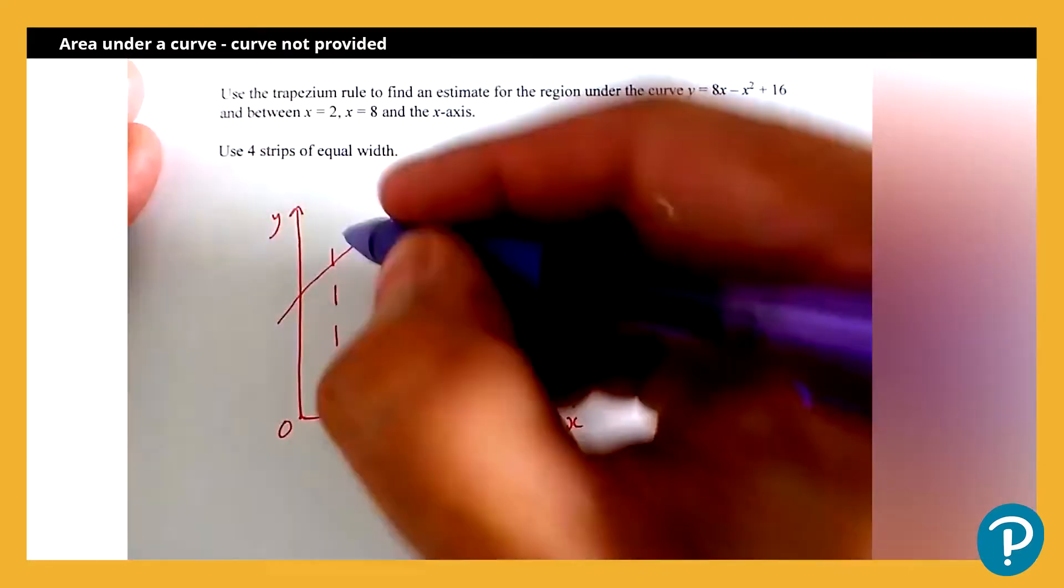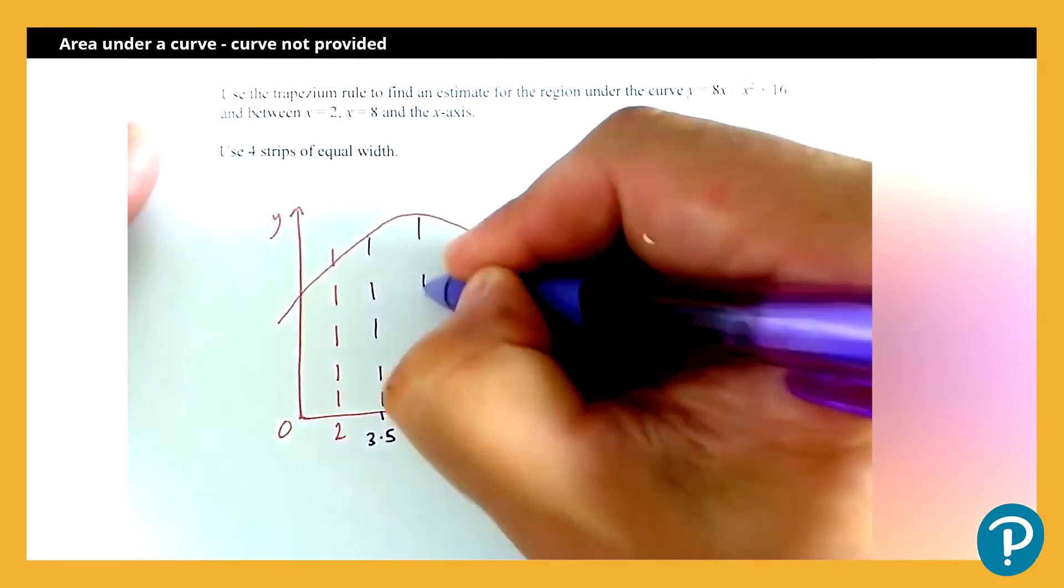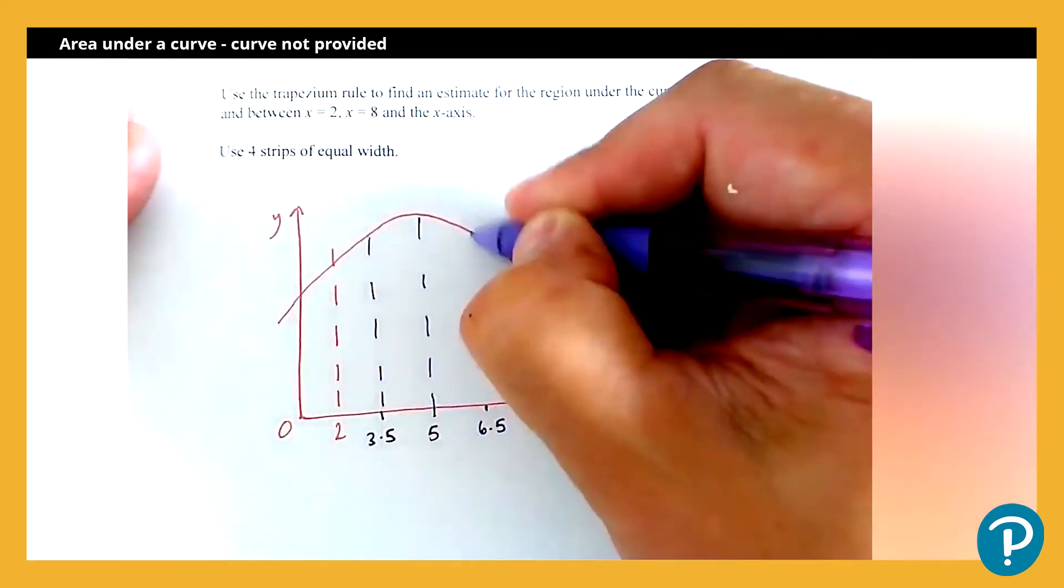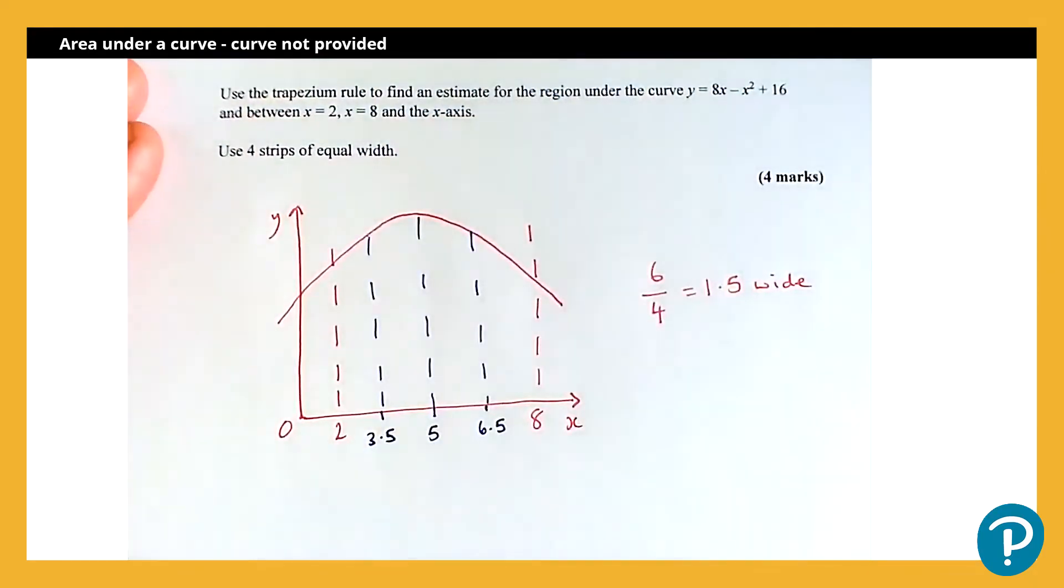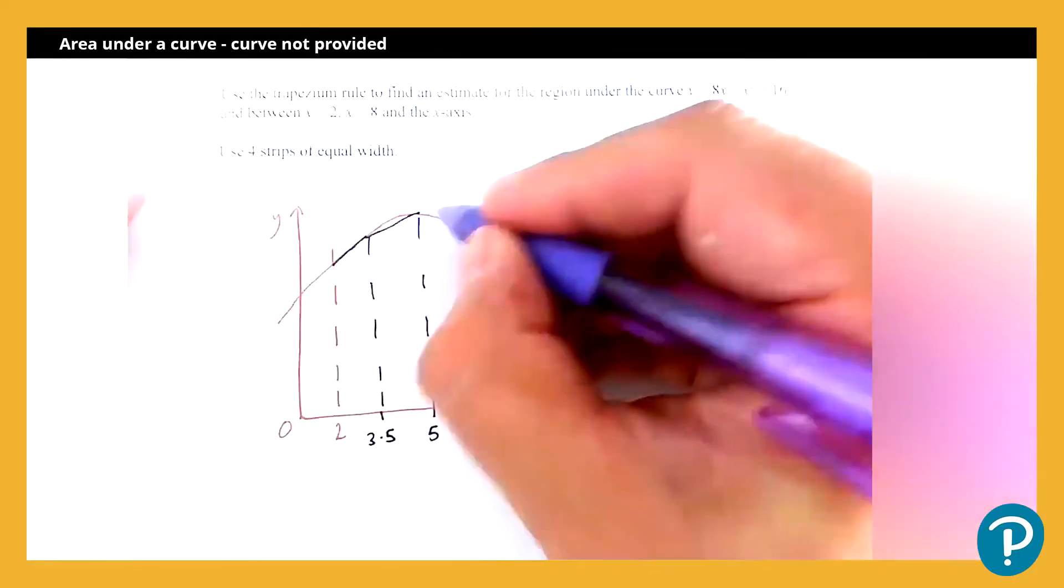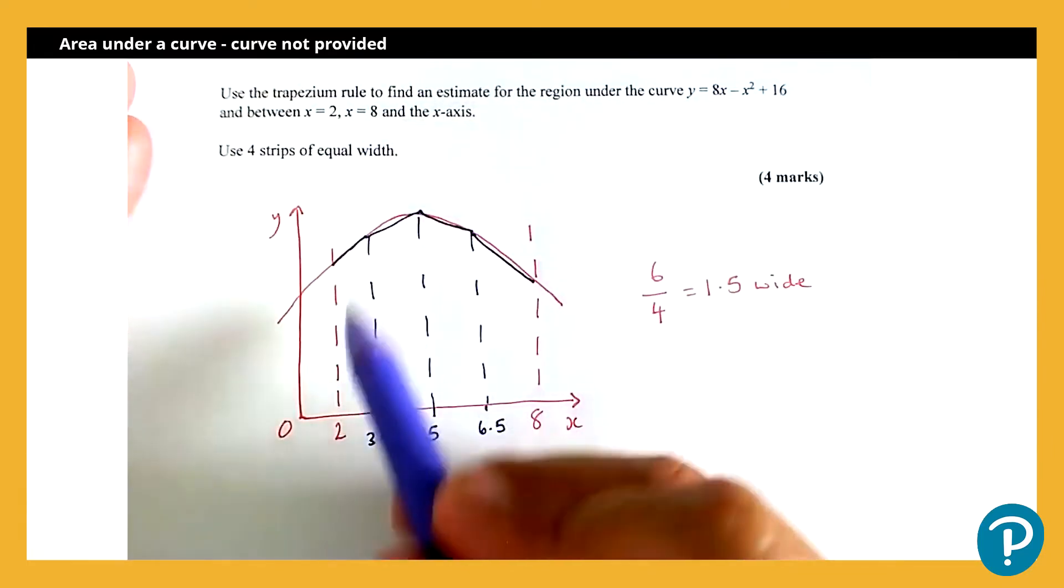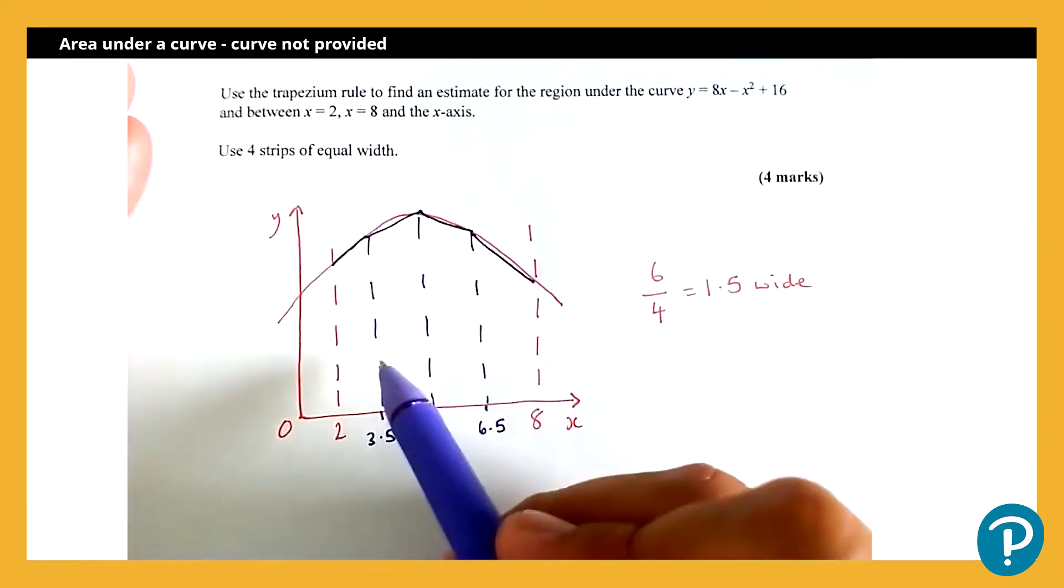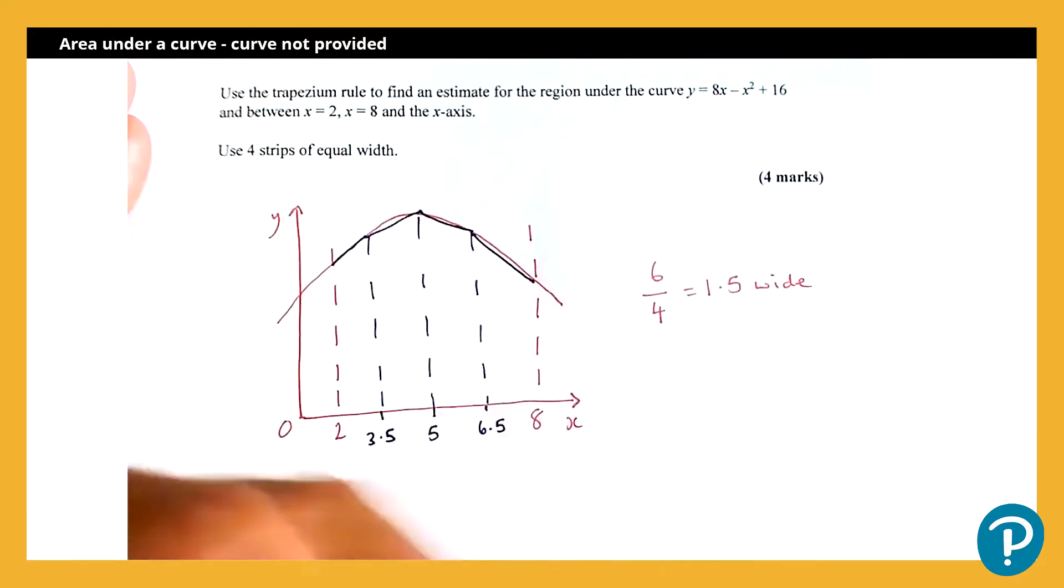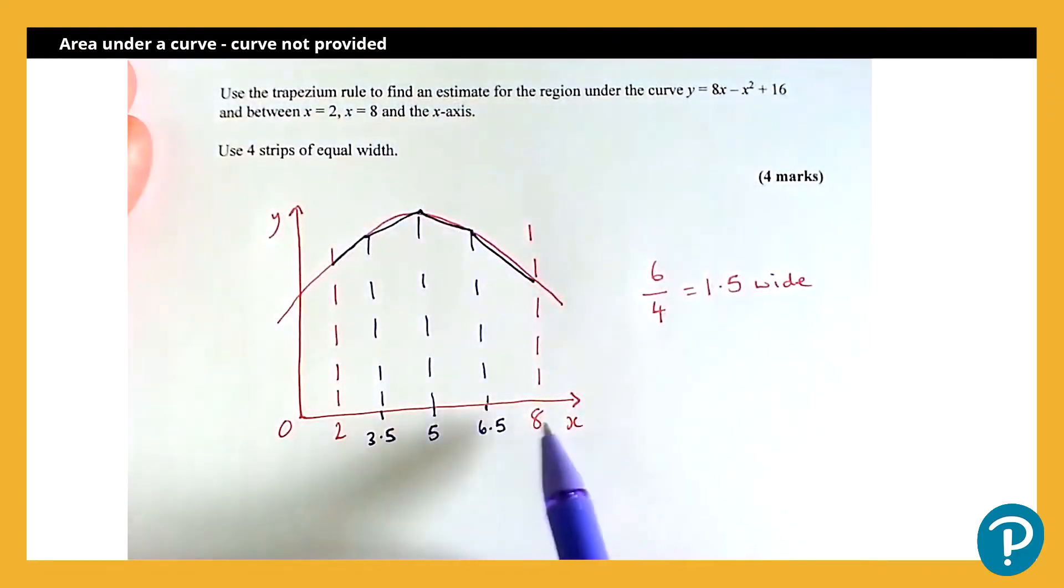Now, if I then draw in the vertical dotted lines here, I'm going to work out an estimate for the area by working out the area of the trapezia that we make with these four strips under the curve. And we do it using the trapezium rule. Now to use the trapezium rule, I need to know what the value of y is for each of these key values. So I've got five: I've got x equals 2, 3.5, 5, 6.5, and 8.